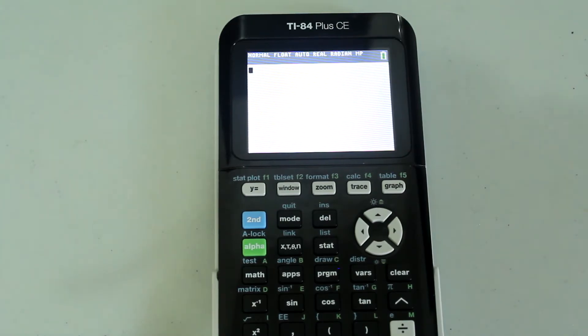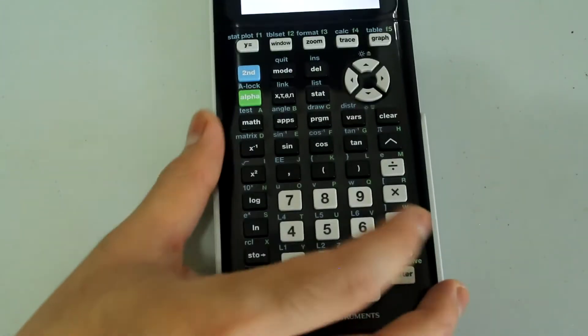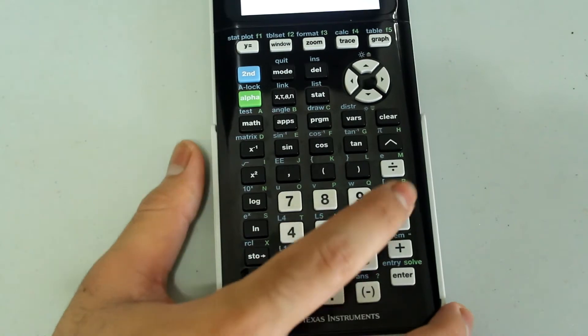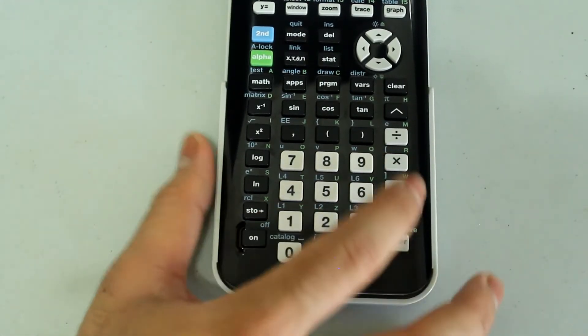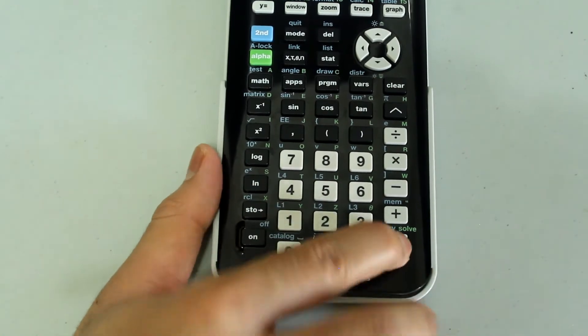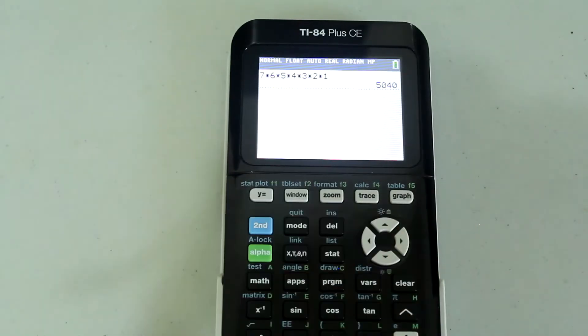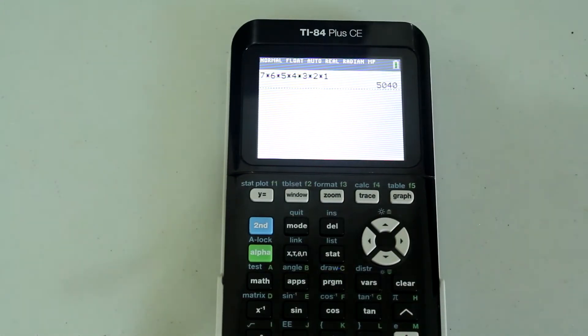Let's say you want to find 7 factorial. You could try typing in 7 times 6 times 5 times 4 times 3 times 2 times 1 and press enter. And that is 7 factorial, but this wouldn't work if you're trying to find the factorial of a large number such as 50.